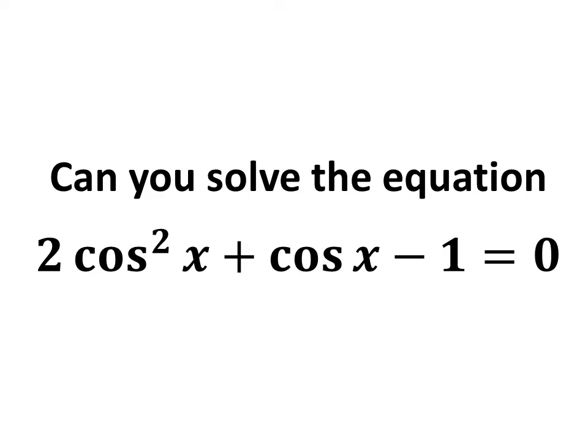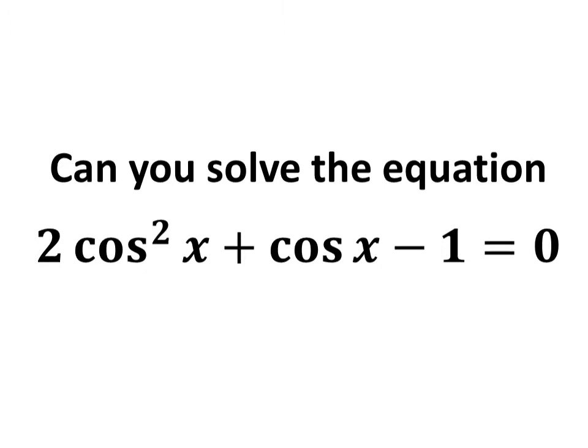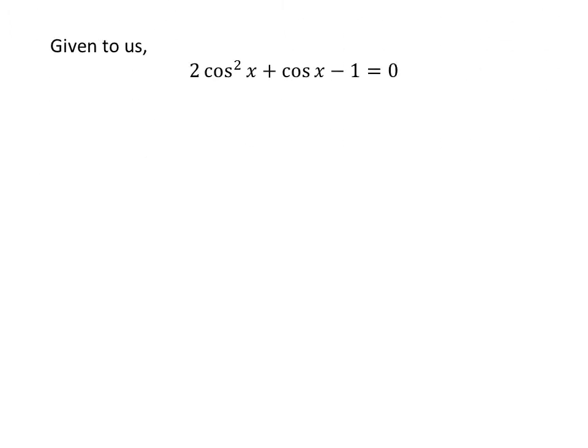In this video, we will learn to solve the equation 2 times square of cosine of x plus cosine of x minus 1 is equal to 0. Given to us: 2 times square of cosine of x plus cosine of x minus 1 is equal to 0.